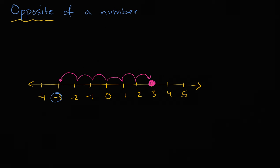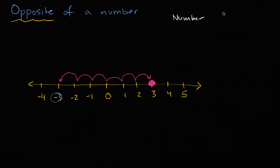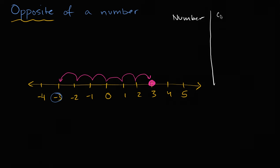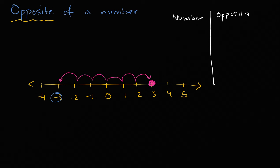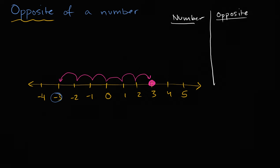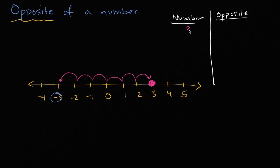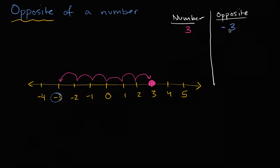Let me make a little table here. So we have the number and its opposite. We just figured out that if you have the number three, its opposite is going to be negative three.